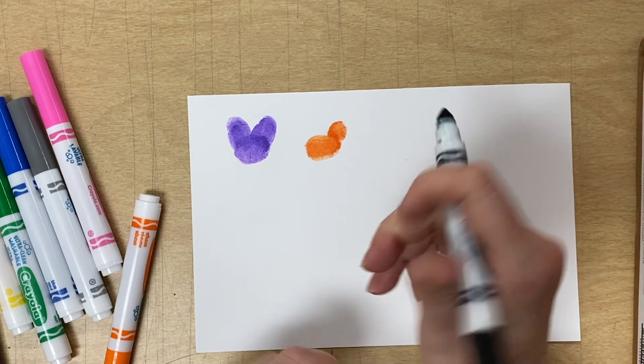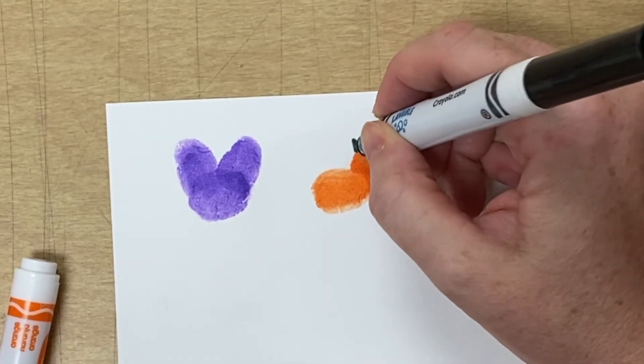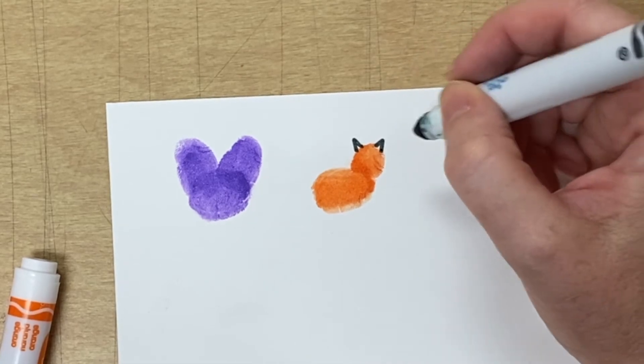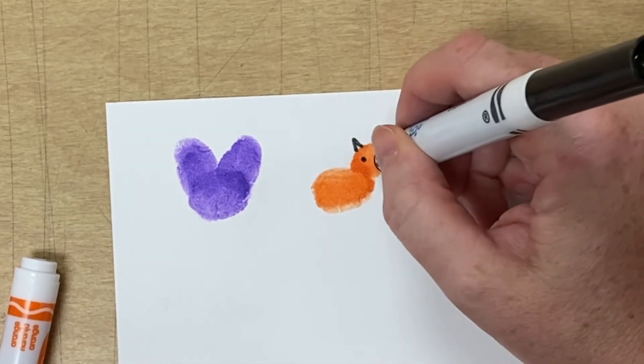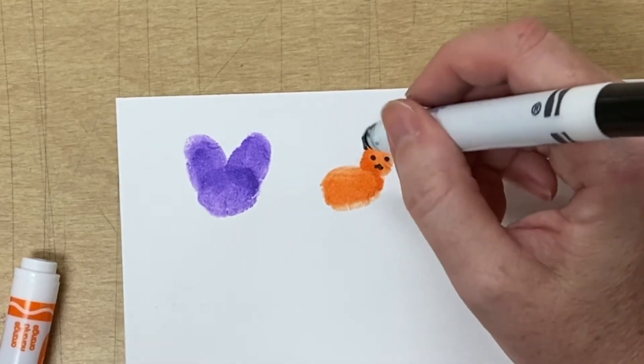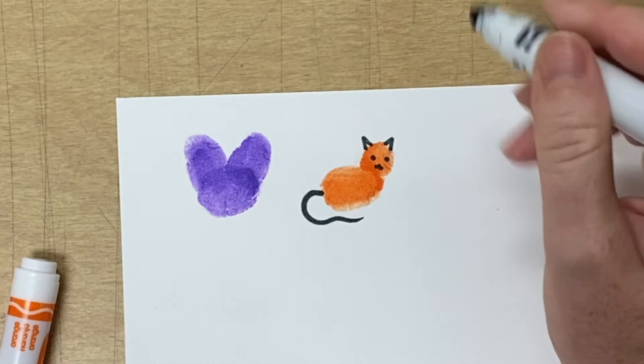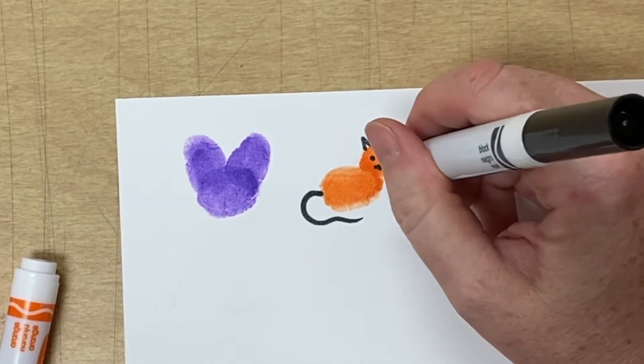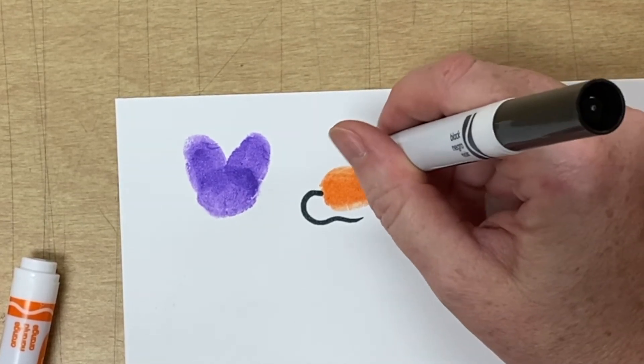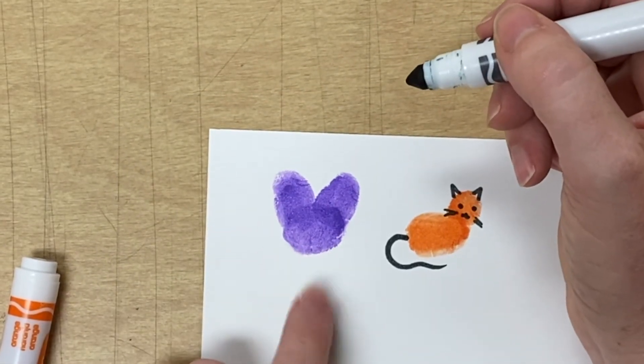So this is when I switch to my black marker. Add some ears. I bet you guessed that would be a bunny.